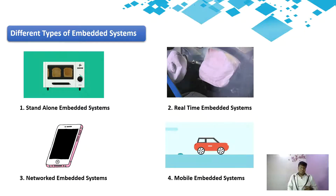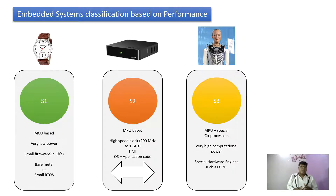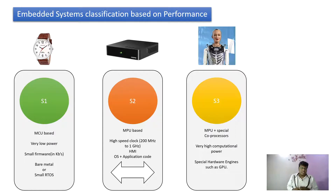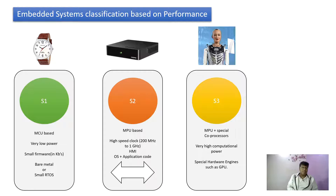Now let's see the embedded system classification based on performance. An S1 system is a microcontroller-based system with very low power consumption and just a few lines of code. It may have bare-metal programming with no OS — just firmware. An example of an S1 system could be a basic wristwatch.